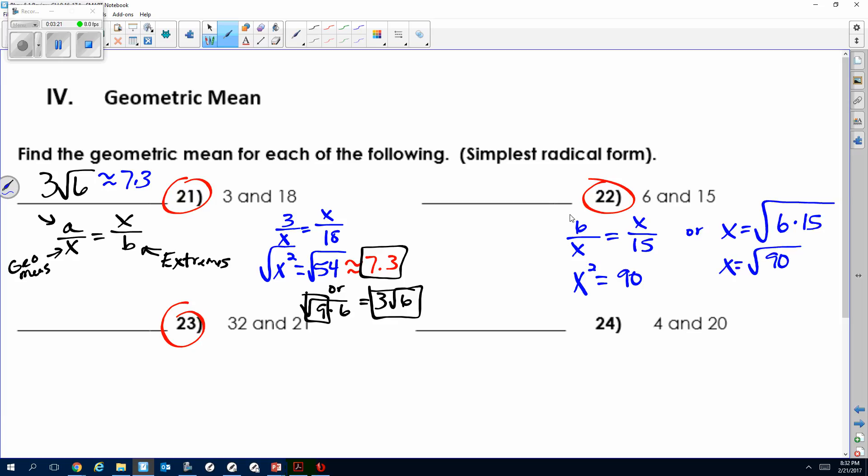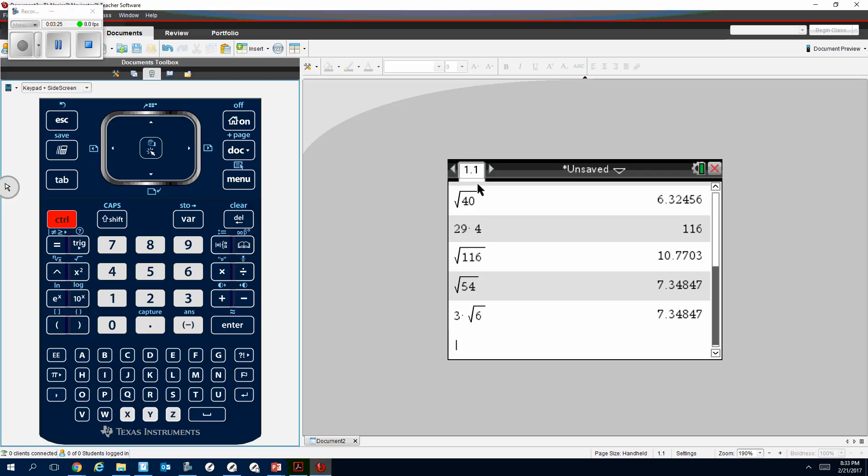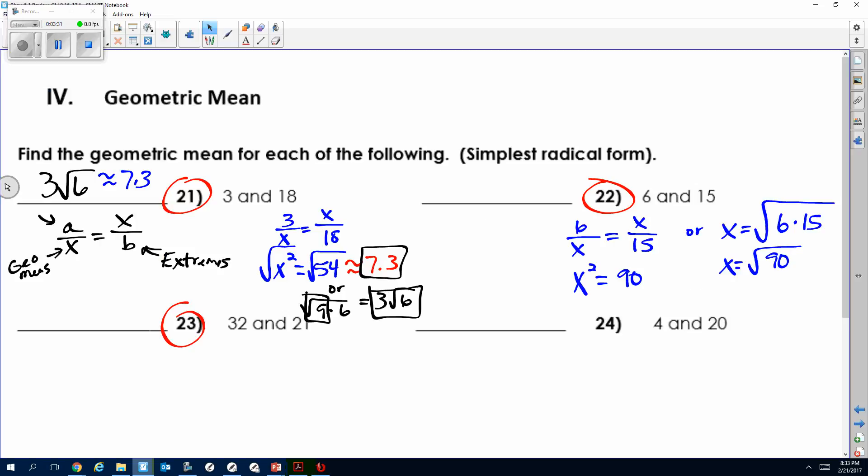We want to simplify that. If I put that in my calculator, control x square, and then the 90 inside, we get a decimal answer which is about 9.5. So we know we're approximately 9.5. But I can simplify this, and it's 9 times 10.